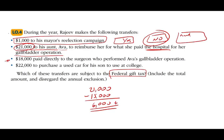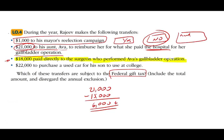Let's look at the third option: $18,000 paid directly to the surgeon who performed the operation. There's a difference between the second and third scenarios. They could give you an email from Rajiv telling the surgeon, 'I'll pay you directly — don't bill my aunt,' or a phone conversation. Here, aunt Ava is not getting the cash; the cash is going directly to the doctor for the medical operation. Under those circumstances, that amount is excluded from the gift tax. Therefore, he doesn't have to add it to his lifetime gift tax.